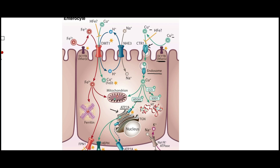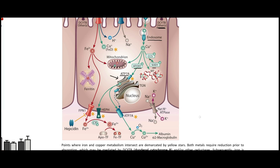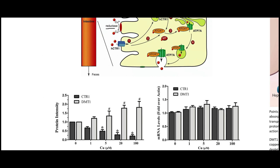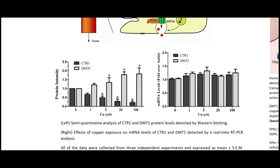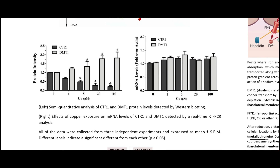Atox-1 brings copper to the trans-Golgi network, where it enters the Golgi apparatus. There, ATP7A proteins — which we'll look at in more detail shortly — allow vesicles to fuse with the basolateral membrane and send copper into the bloodstream. The copper 1+ then becomes copper 2+, binds to albumin, and is transported throughout the blood.